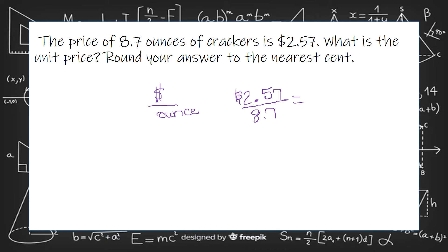And I'm going to take my handy-dandy calculator to simplify. If it was a little cleaner division, you could do it on paper. But you can also use your calculator. Just type in 2.57 divided by 8.7.